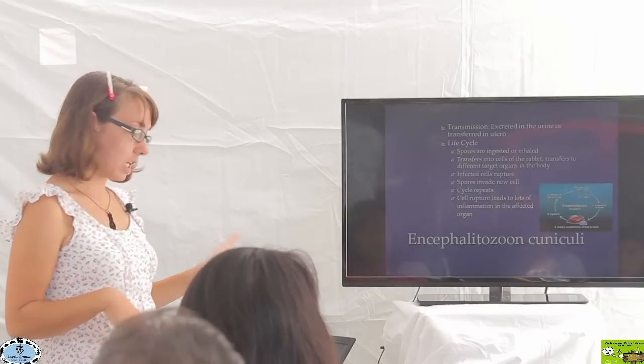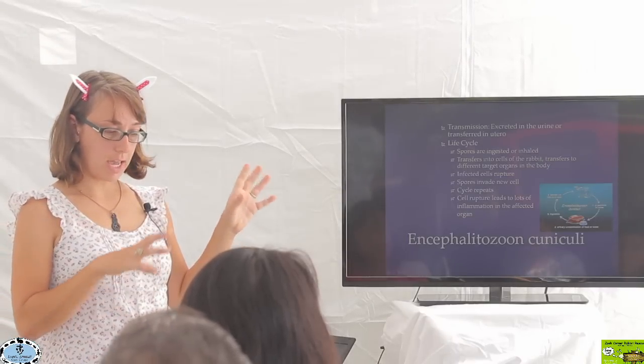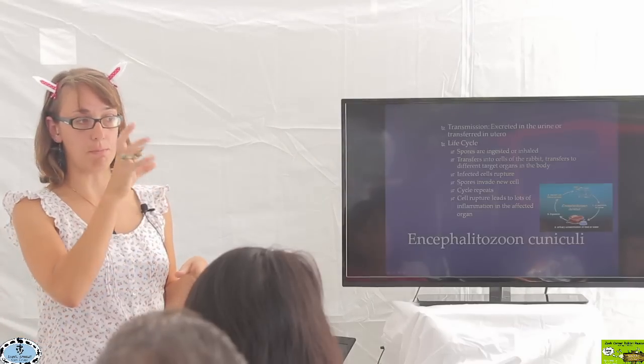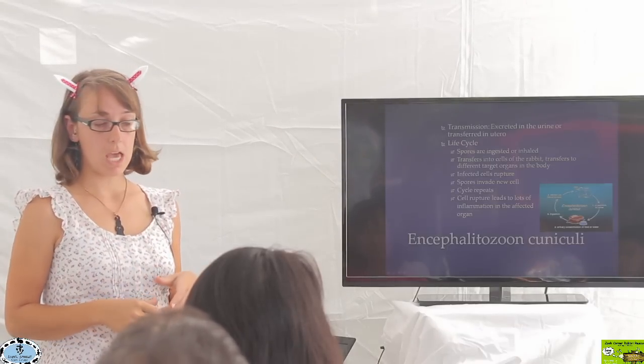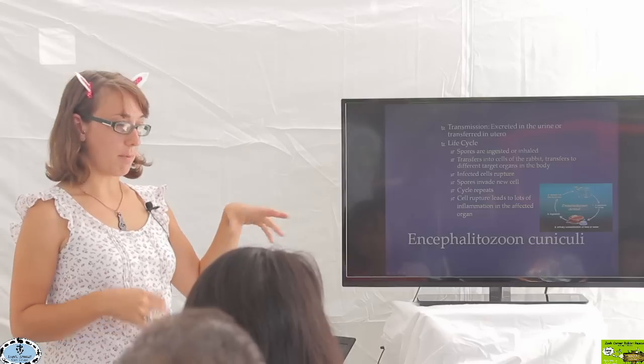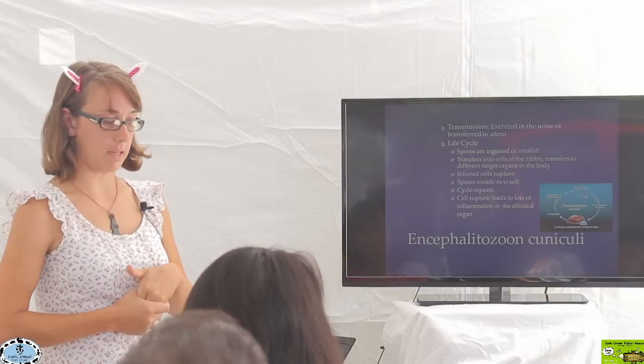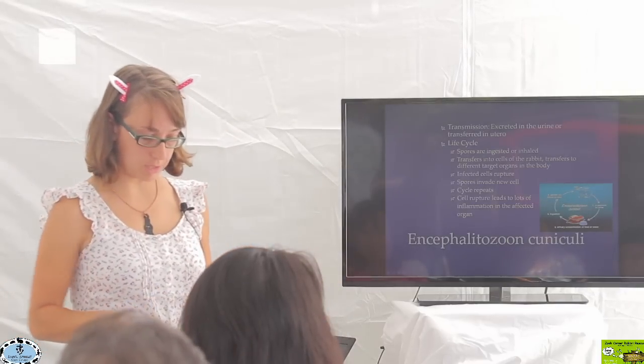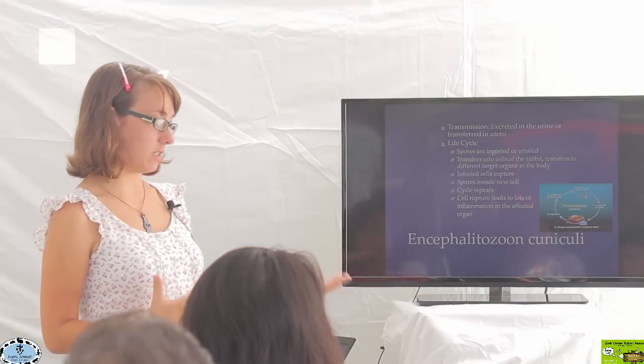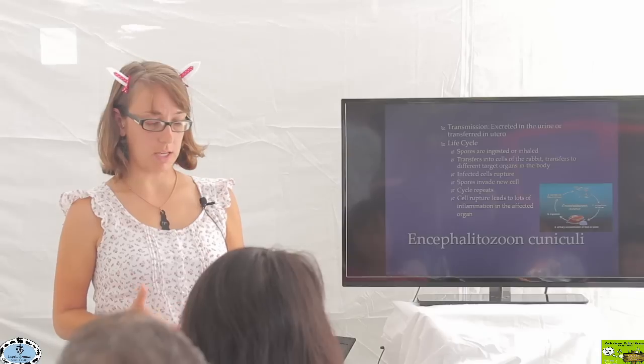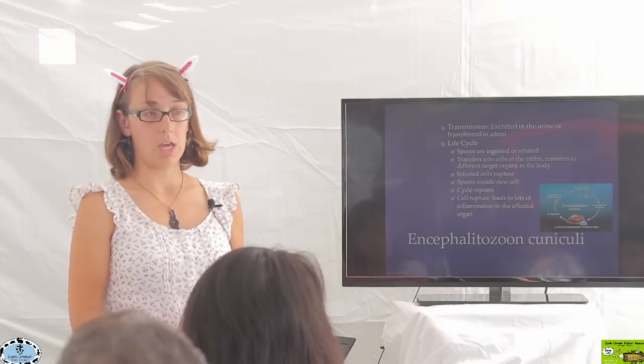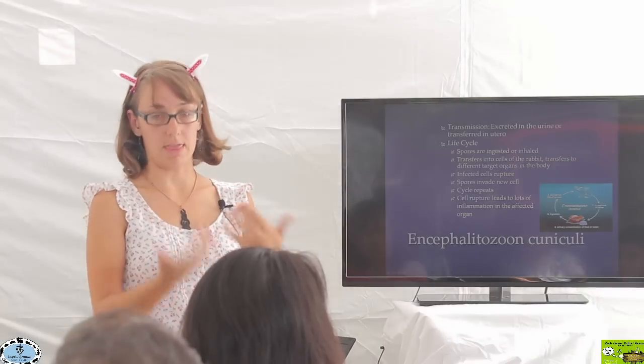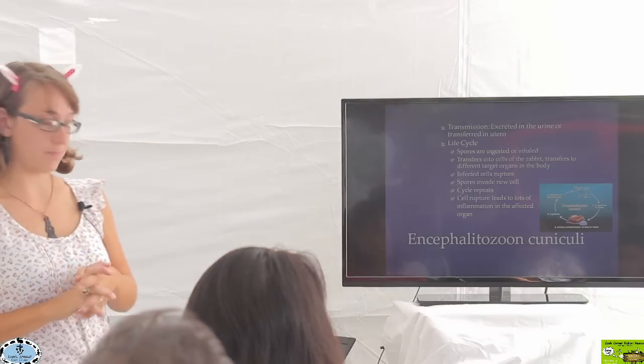It's transmitted either in the urine or transovarily, meaning from the mother rabbit to the babies when in the uterus. If the mother doesn't transmit it to her babies in the uterus, and they're born and living together, the disease comes out in her urine. If they're exposed to her urine, which inevitably they are, they can ingest it and it gets into their system.